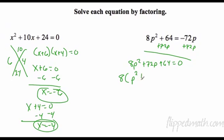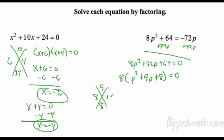I have a greatest common factor. I'm taking it out. Divide everything by 8. 8 divided by 8 is 1, 72 divided by 8 is 9, 64 divided by 8 is 8. Factors of 8 that add to 9 are 8 and 1. So now I have 8(p + 1)(p + 8) equals 0.